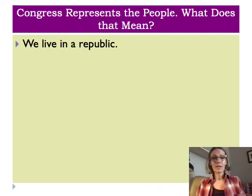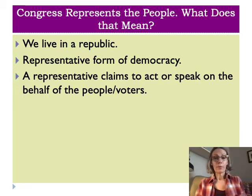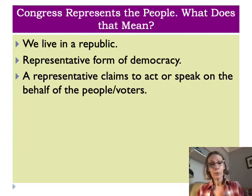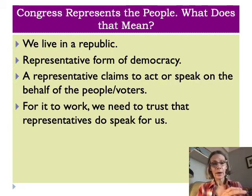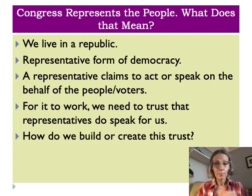We live in a republic, which means we have a representative form of democracy. In a representative democracy, the people don't directly make decisions about laws and policies — we elect somebody to do that bidding for us. So for representative democracy to work, we need to trust that representatives actually speak for us. How do we build this sense that when the representative is acting, they're acting on behalf of the will of the people?